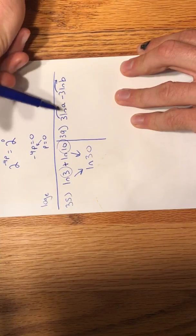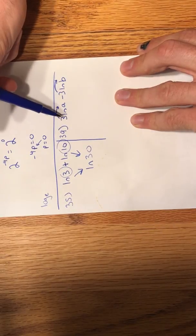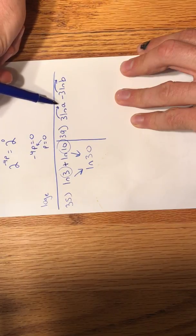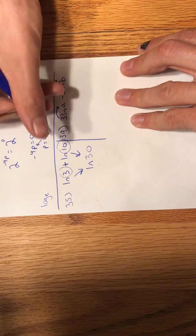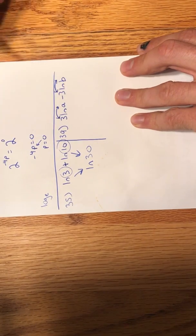And because we have a log in the problem, or in this case a natural log, same difference, we can apply what's called the power property, which lets us move exponents down to the front, or from the front back up. It works in both directions. So I'll put an arrow that goes both ways to show that it's bidirectional.